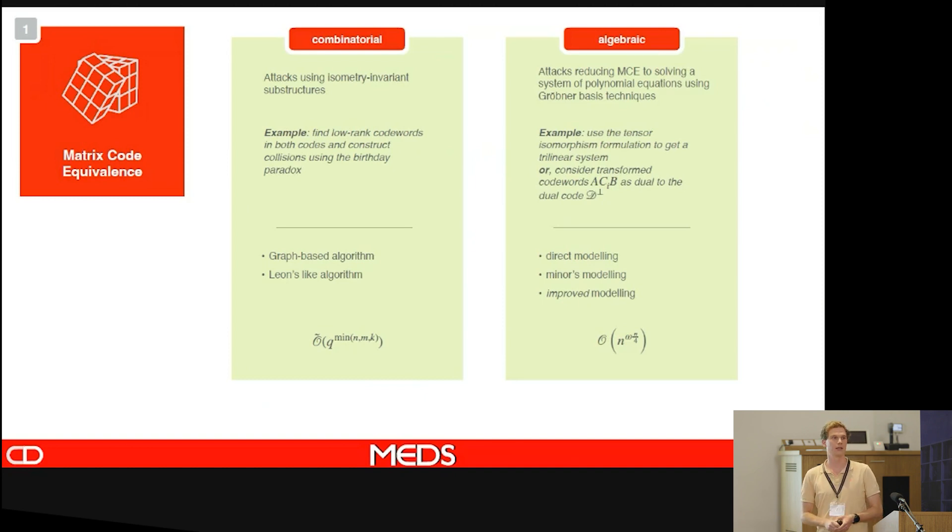On the other hand, we also have the algebraic attacks. For this, we make a system of polynomials and we use Gröbner basis techniques. There's two ways to do this. We can use the tensor isomorphism problem to get a trilinear system. But then we are already in degree three. On the other hand, we can take the more coding theory perspective. We can go from one to the other and see what happens. We can see that the code words A, CI, B should be dual to the dual code of D. Then we get the following asymptotic complexity, but you should note that for the algebraic, the asymptotic complexity is not a good estimator because this reaches the asymptotic complexity only at really high, cryptographically irrelevant parameters.